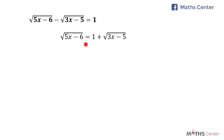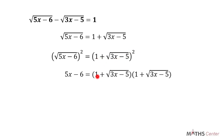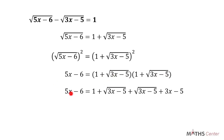I'll now square both sides. So we have square root of 5x minus 6, squared, equal to 1 plus square root of 3x minus 5, squared. The left side gives us 5x minus 6. The right side expands as two brackets of 1 plus square root of 3x minus 5. Expanding: 1 times 1 is 1; 1 times square root of 3x minus 5 is root of 3x minus 5; square root of 3x minus 5 times 1 is root of 3x minus 5; and square root of 3x minus 5 times itself gives us 3x minus 5.